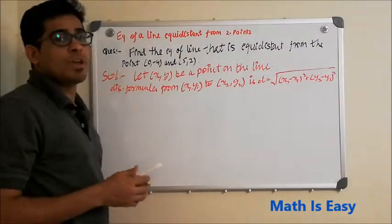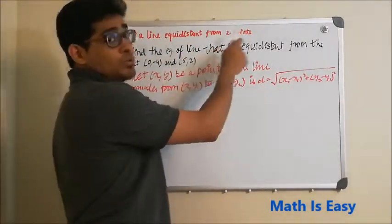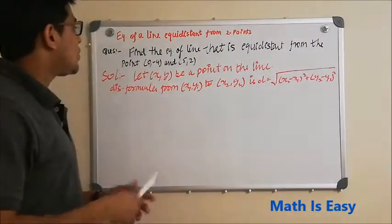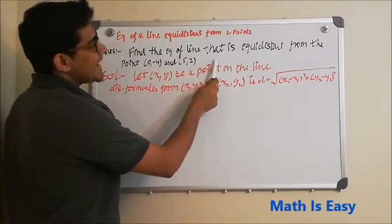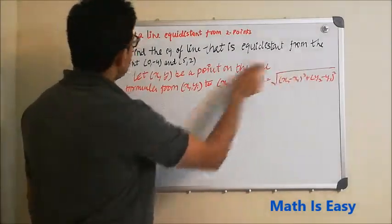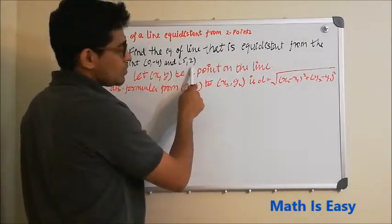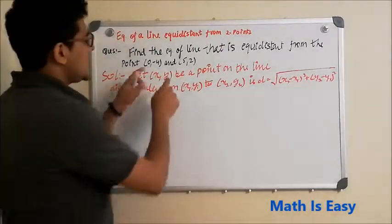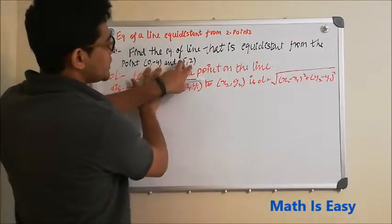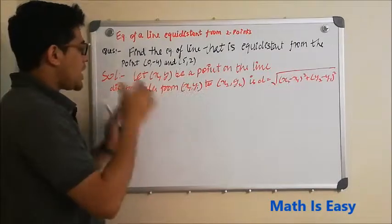In this video, we are going to find the equation of a line which is equidistant from two points. The question is: find the equation of a line that is equidistant from the points (0, -4) and (5, 2). We have to find the equation of a line which is equidistant from these two points, so suppose that point is (x, y).